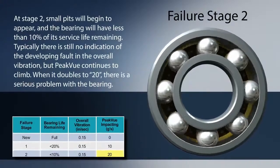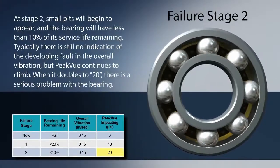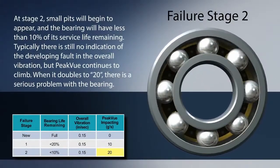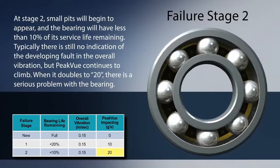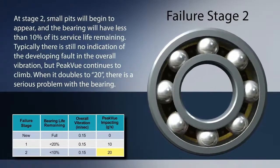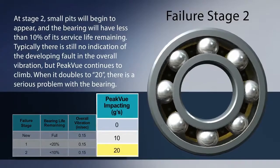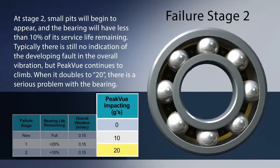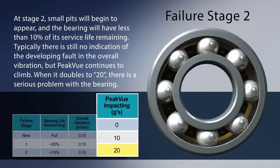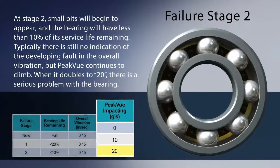At stage two, small pits will begin to appear, and the bearing will have less than 10% of its service life remaining. Typically, there is no indication of the developing fault in the overall vibration, but peak view continues to climb. When it doubles to 20, there is a serious problem with the bearing.